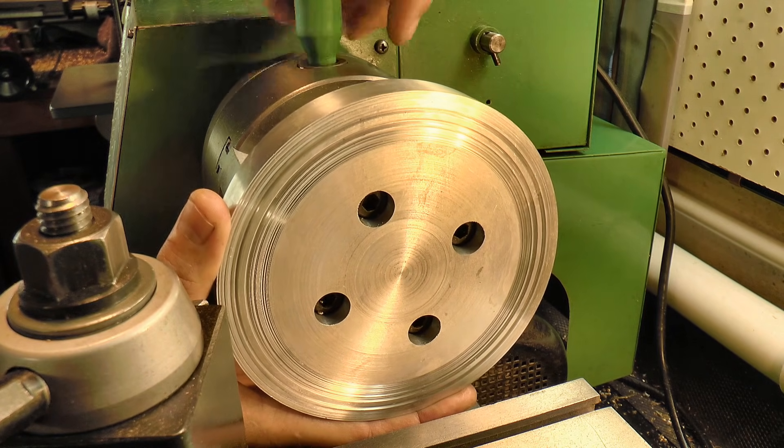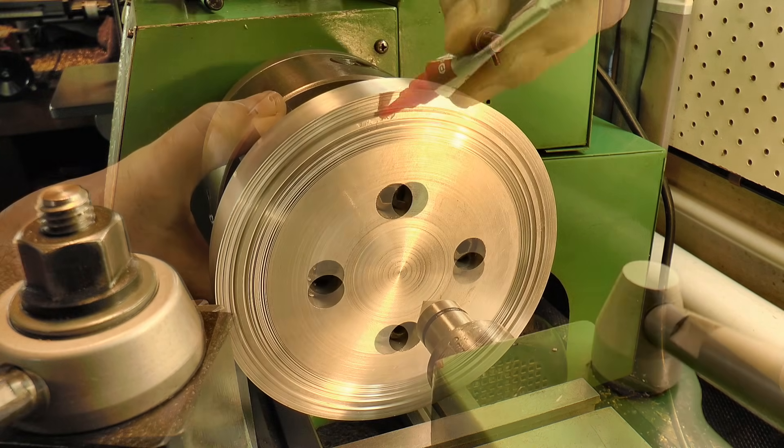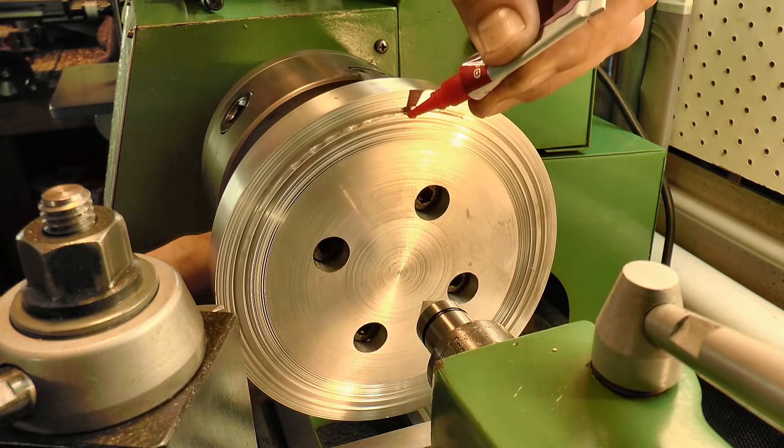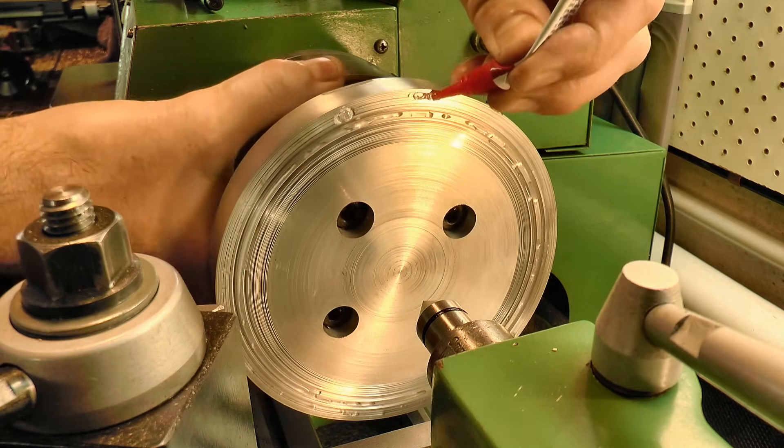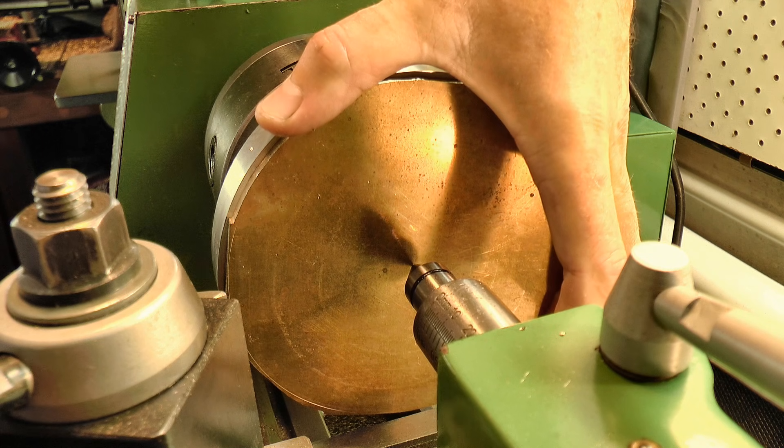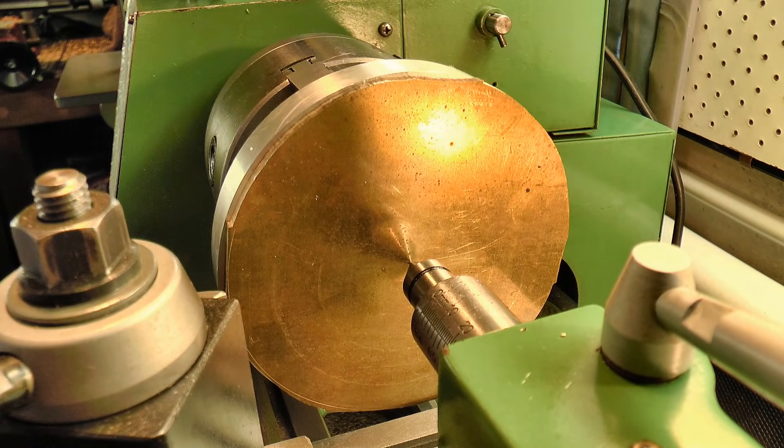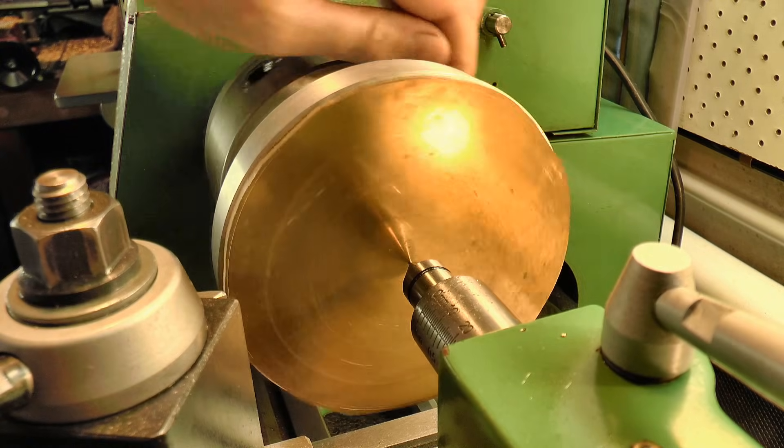The real challenge for this part is simply holding onto it to make the cuts, and if you've been watching the previous videos in this series, you won't be surprised to see me reaching for another superglue arbor. I've sized this arbor to give me access to the front and perimeter of the part, and to also allow me to make a trepanning cut in the center, which I'll show you in a moment.